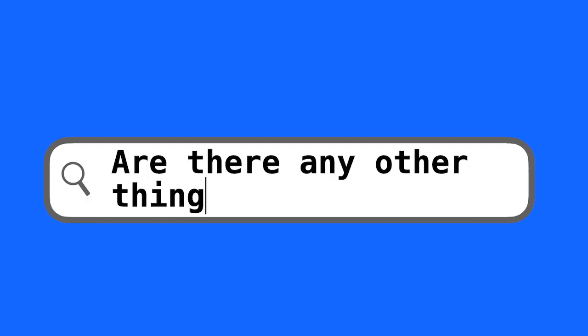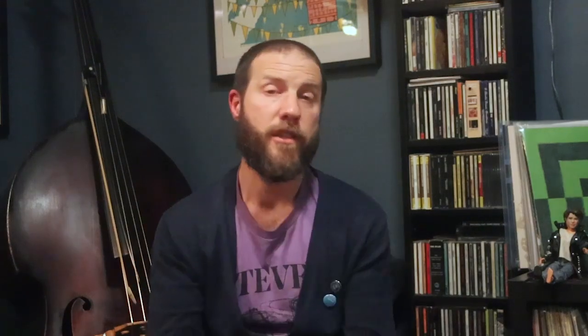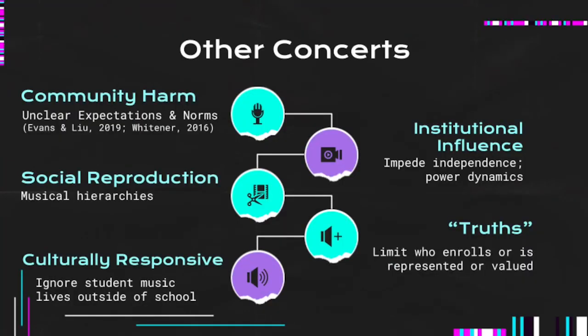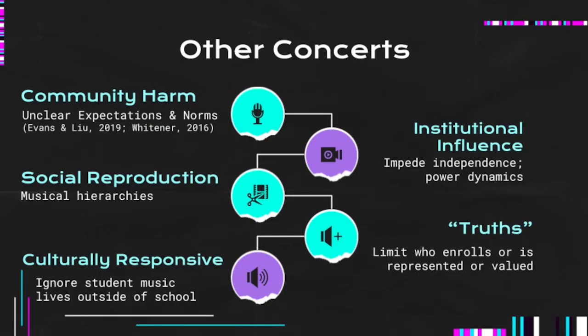Are there any other things I should consider or more research needed? Educators have to be careful not to produce environments where unclear expectations and norms may cause harm to students' relationships or a fracture of trust within the ensemble. Music educators also need to consider structural and institutional factors that may impede independence. Classrooms exist within larger school environments, which exist within larger cultural environments, and often ignore more structural and cultural influences of power. Traditional music programs can play a role in social reproduction, limiting who might choose to enroll, missing out on diversity of skill, culture, and perspective, and completely ignoring students' musical practices outside of school. Another related area of consideration would be culturally relevant practices.